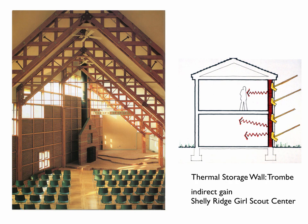The second system is the thermal storage wall. We just saw the Shelley Ridge Girl Scout Center as one example. The glazing has an air space behind it, and the heat is absorbed into the thermal storage medium — in this case, a masonry wall coated with an absorptive surface. At the Shelley Ridge Girl Scout Center there are no vents, so it's a radiant transfer through the mass. You can also insulate in the cavity at night or in summertime.